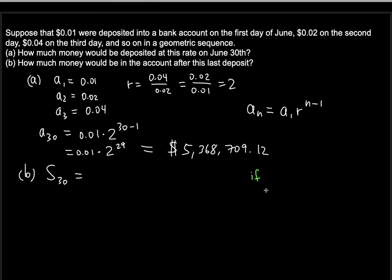In this formula, we have a finite set. We have a finite number, 30 terms. So for this, we're going to use a different formula. If r is not equal to 1, and this is good because r is not equal to 1 here, it's 2.